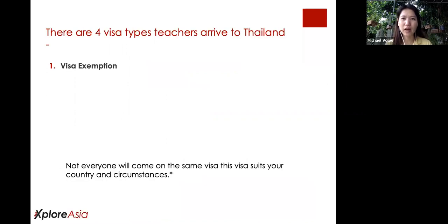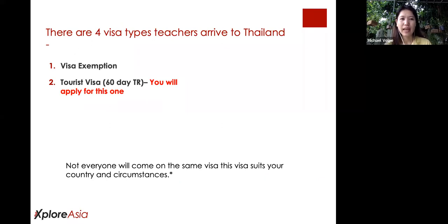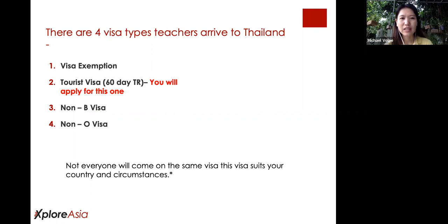There are four types of visa that teachers come here on. They are: visa exemption — this is for South African people; the tourist visa — this is the 60-day tourist visa for you, which you have to apply before you arrive; the Non-B visa, which is a working visa; and the Non-B volunteer visa, which is only three months duration. Not everyone in the program will come on the same visa — it depends on your condition, circumstance, and duration of stay.